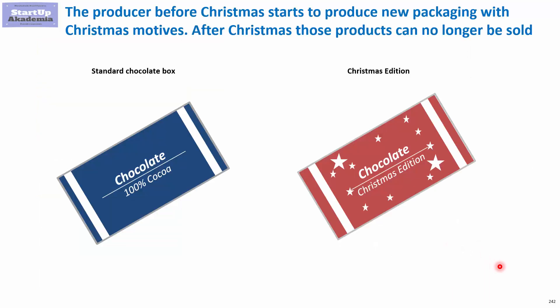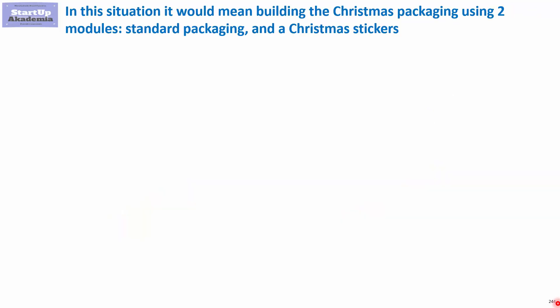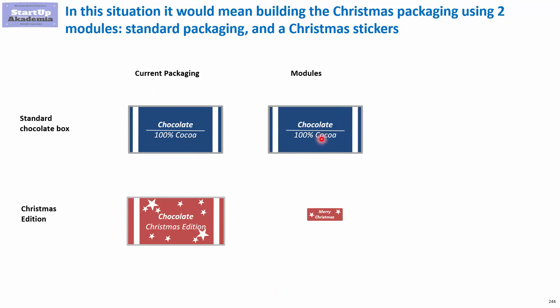Let's see what we mean by modularity in this case. Currently they use a standard chocolate box, and for Christmas they produce a special Christmas packaging with Christmas motifs. Since this has special motifs, it is not in big demand afterwards, so it has to be sold at a discount. The hypothesis is that we can reduce costs and limit inventory by changing the packaging using some modularity. Currently we have two types of packaging: the regular standard chocolate box and the Christmas edition. The idea is to create two modules — one module would be the current standard packaging, and then we would have a special sticker placed on the standard chocolate box to make it look like a dedicated Christmas product.